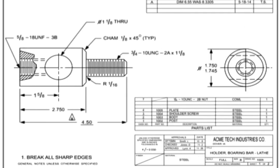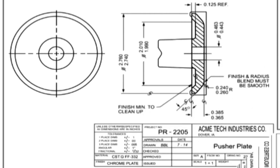A machine drawing details all the information required to take raw material and turn it into a finished part. The machining tolerances, material, finishes, etc. are all shown on the detail drawing. Machine drawings are detail drawings that require machining to create the end product.